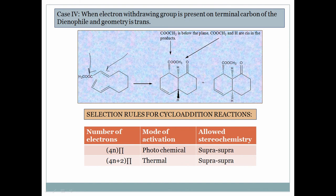The selection rules for cycloaddition reactions using the FMO approach: for 4nπ systems, 2π+2π cycloadditions are photochemically allowed. For supra-supra cycloadditions, 4nπ (2π+2π) cycloaddition is photochemically allowed, while 4n+2π (Diels-Alder type, 4π+2π) cycloaddition is thermally allowed. In summary, 4π+2π cycloaddition is thermally allowed, and 2π+2π cycloaddition is photochemically allowed.